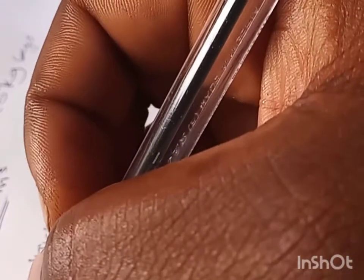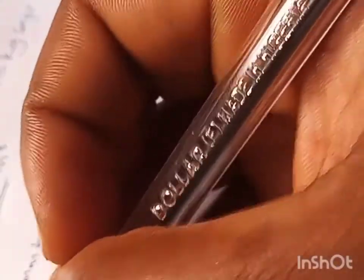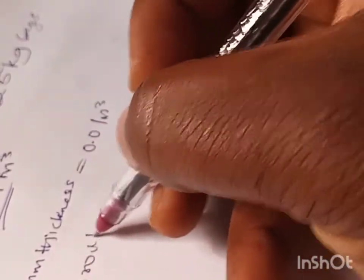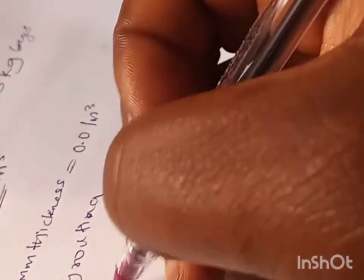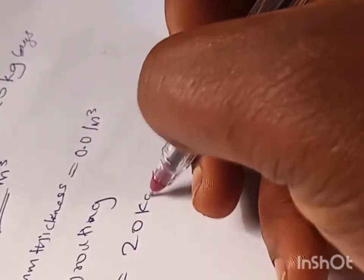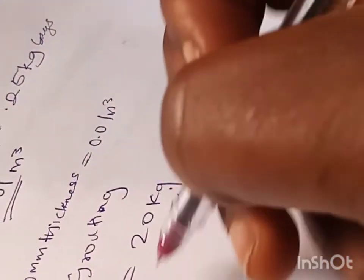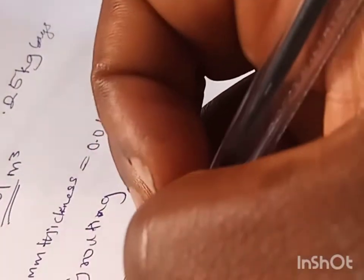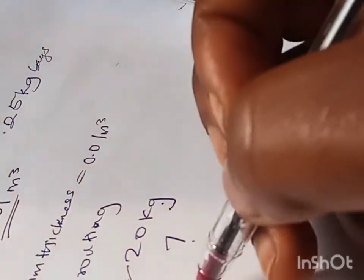We are going to know the volume of the product to be used for one cubic meter of grouting. We're going to do that on a pro rata basis. If 0.01 cubic meter is equal to 20 kg bag, how many kg bags will give us one cubic meter of grouting? We're going to cross multiply: equal to 20 times 1 divided by 0.01. This will give us 2000 kg.